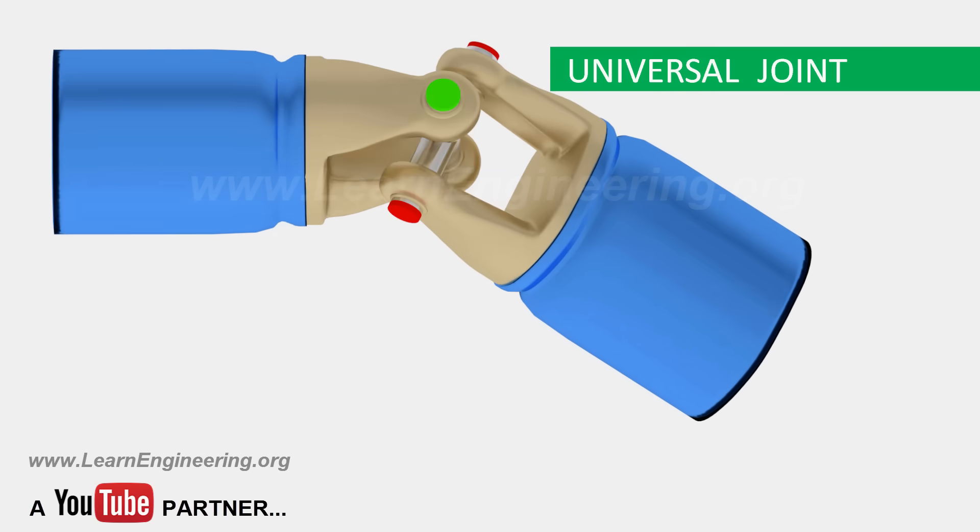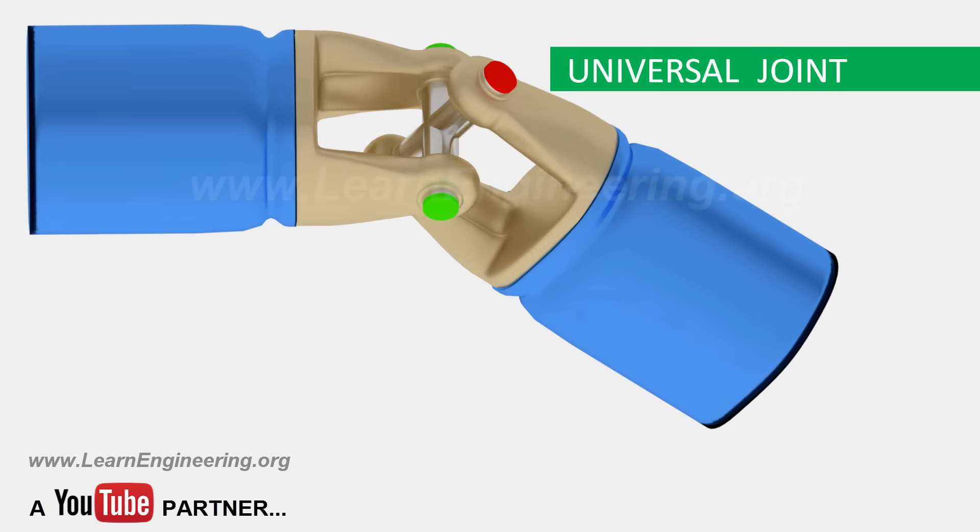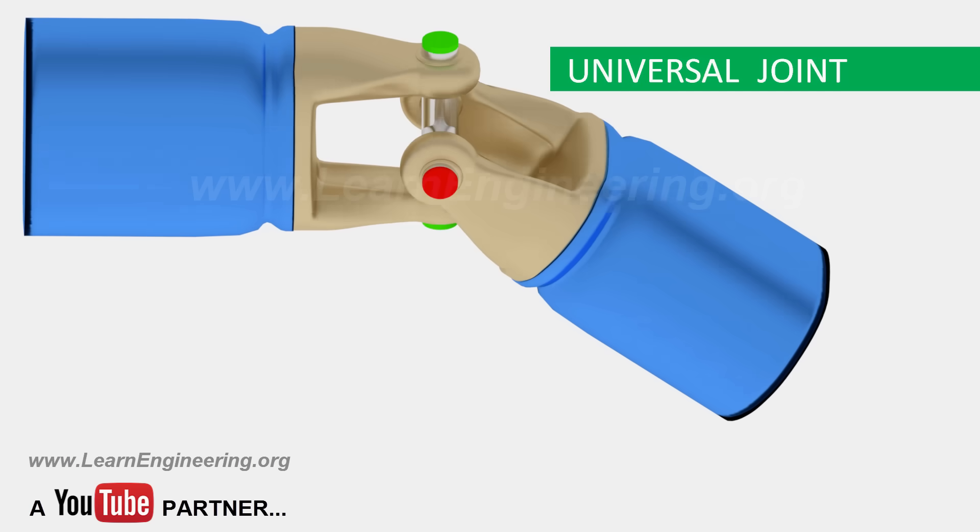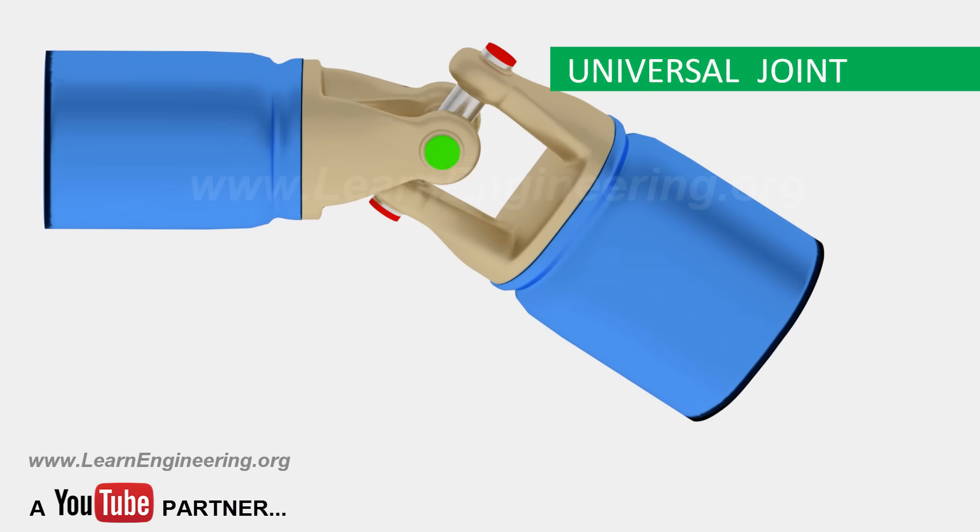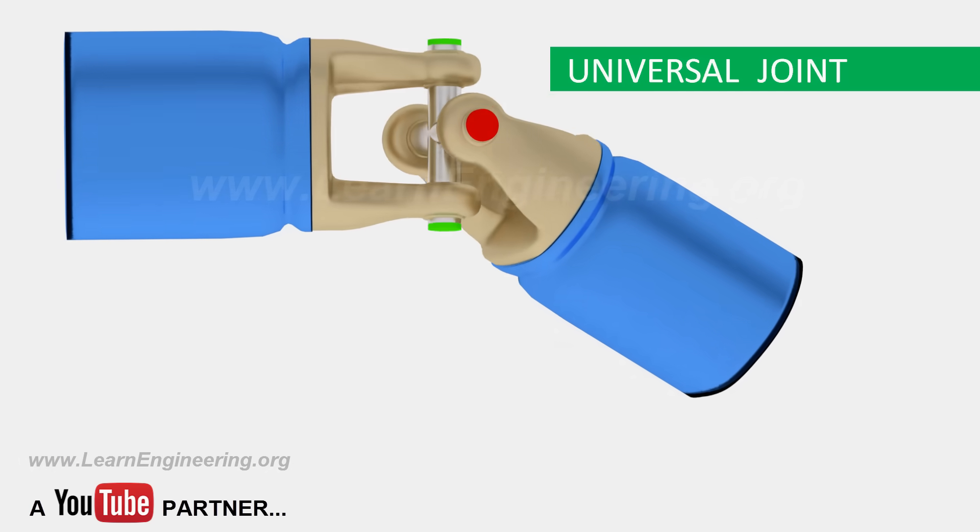Universal joints are commonly used to transfer mechanical power between two shafts when their axes are at an angle to each other. Their invention dates back many centuries.